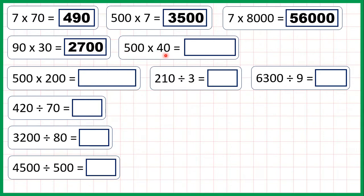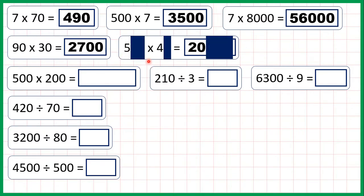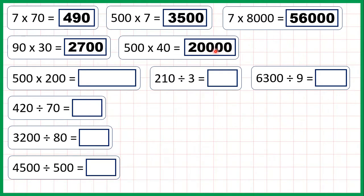500 times 40 is 20,000, because 5 times 4 is 20. It's important to remember that this zero is not an end zero, because it came from multiplying the non-zero digits — multiplying 5 by 4. So 5 times 4 is 20, but after the 20 we need three end zeros, because we have three end zeros in our question: two here and one here.